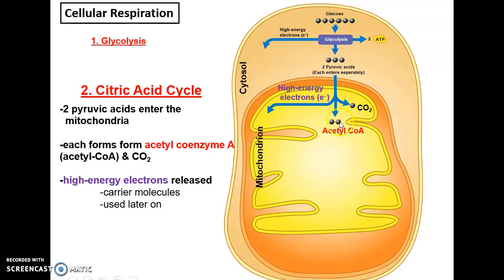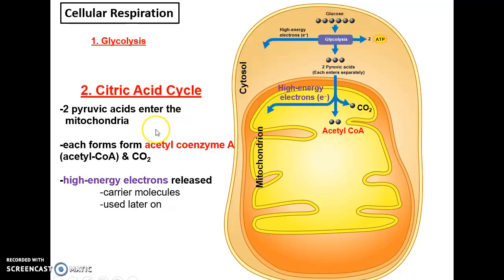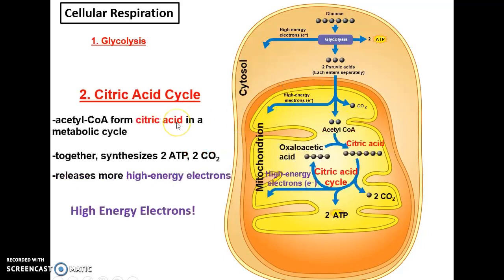Inside the mitochondria, pyruvic acid is modified to become acetyl coenzyme A. During this process, you also produce some high-energy electrons and a carbon dioxide molecule, which can be released.